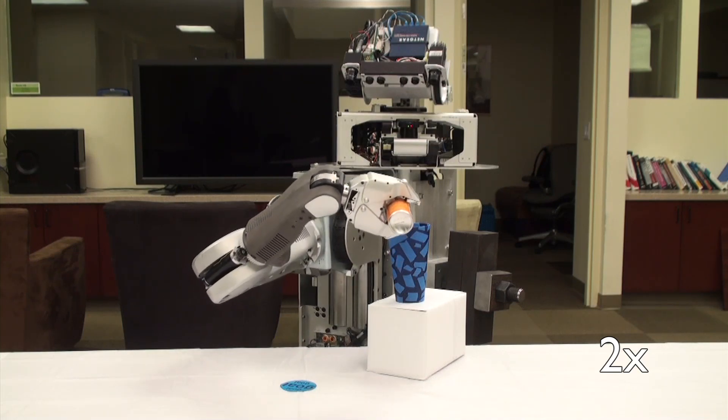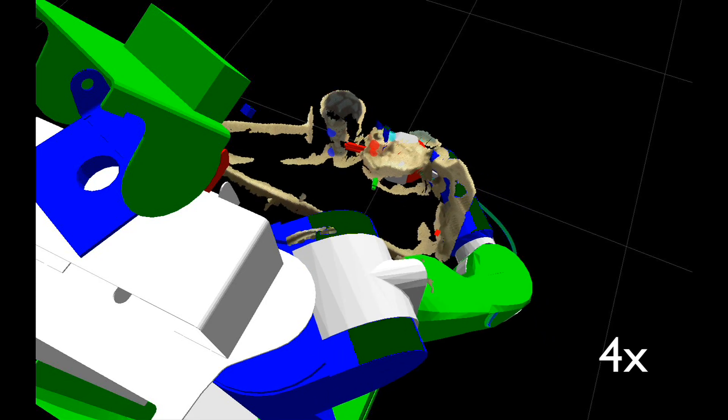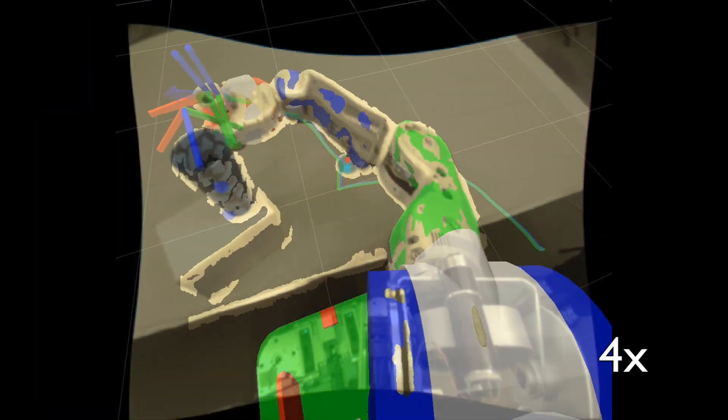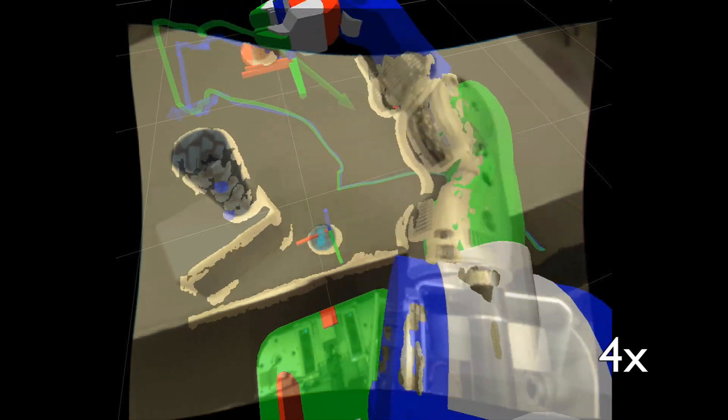The underlying movement representation also allows for changes of object positions during the movement. This approach enables the robot to build up a library of movements and use these movements even in dynamic environments.